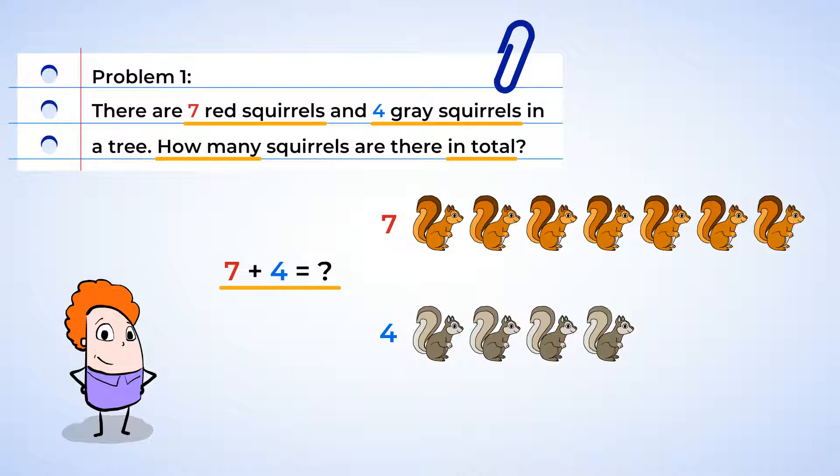We can use the picture of the squirrels to help us. We already know there are seven red squirrels, so we don't have to count them again. We're going to start at the number seven, and count up from there to add four more gray squirrels. Eight, nine, ten, eleven. Now we know that there are eleven squirrels in total. And we can replace the question mark from our addition sentence with eleven. And our final addition sentence looks like this. Seven plus four equals eleven.